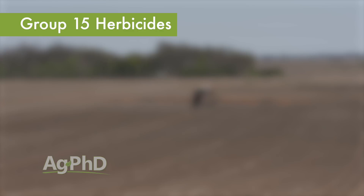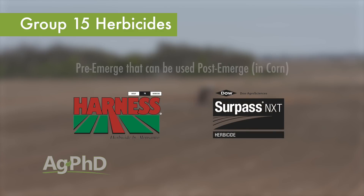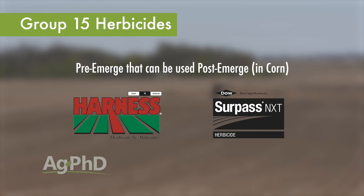Now Darren, you left out Harness and Surpass. Those are pre-emerge herbicides that can be used early post as well in corn. You're not going to use those early post in soybeans, and that's probably why you left them out — because Warrant, Outlook, Dual, and Zidua can all be used in corn or soybeans.